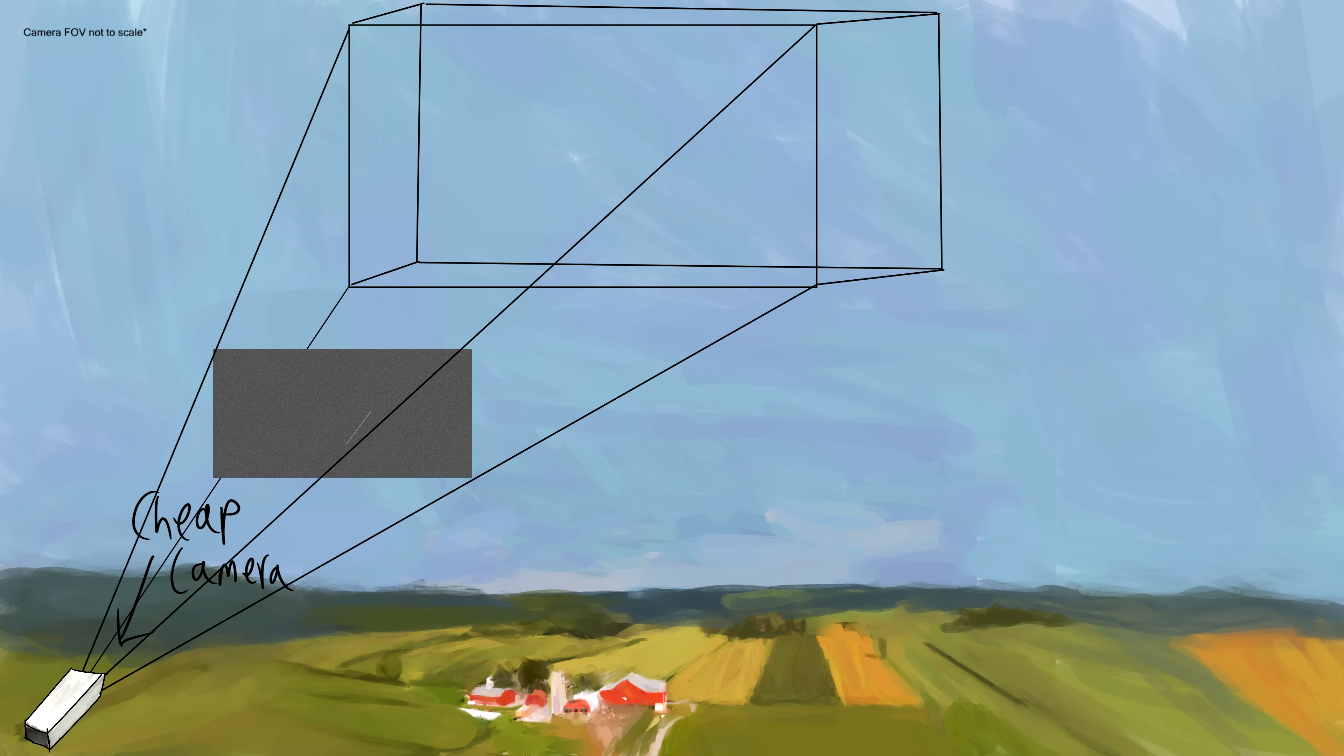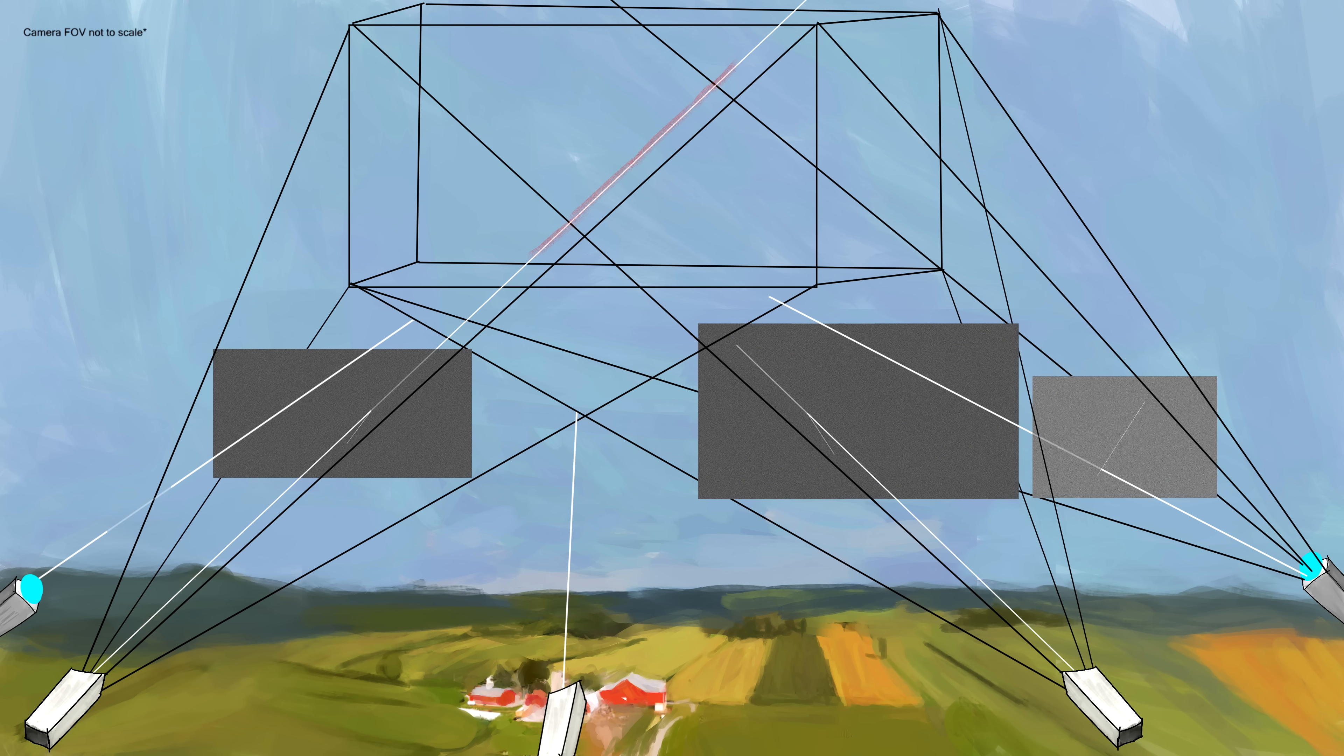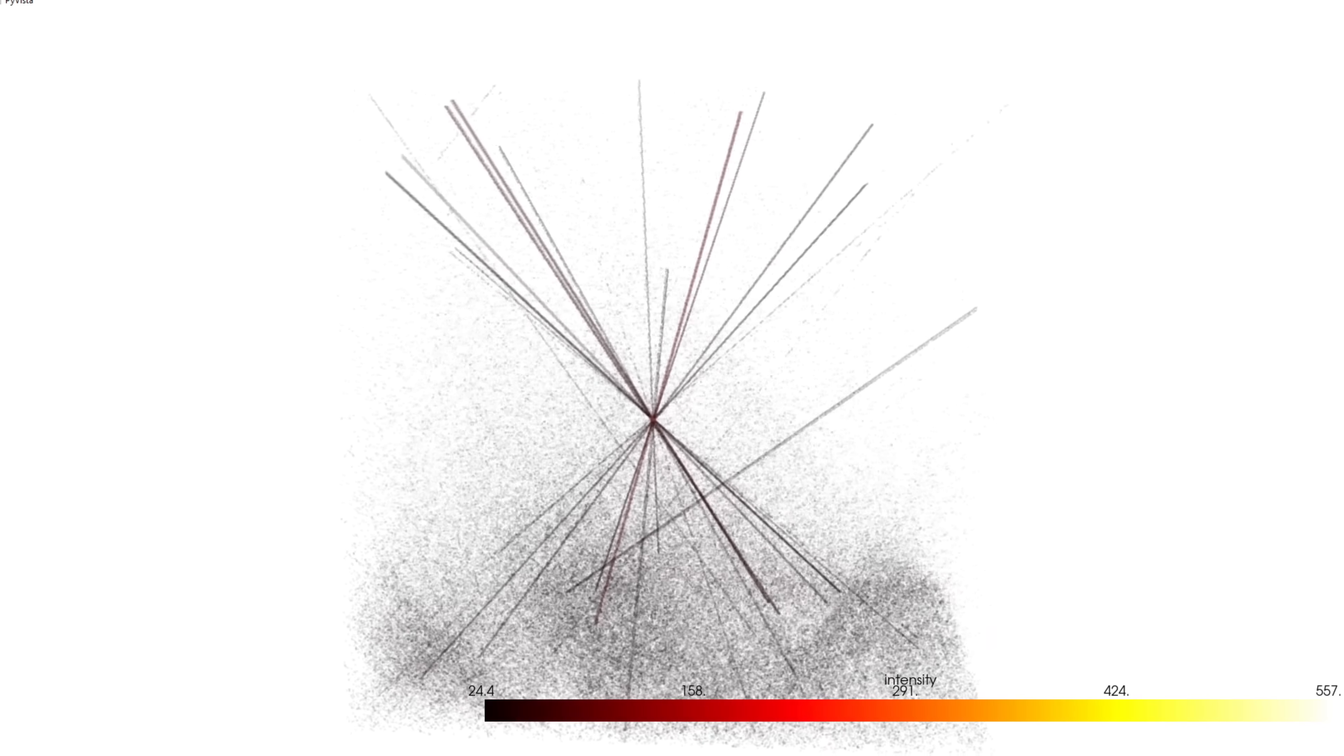But if we take these images and project a ray from each of the pixels back out from the camera in the direction that they were taken from into a grid of voxels and add the motion of that ray's pixel to each voxel it hits, and then repeat this from a bunch of different cameras, we get this.